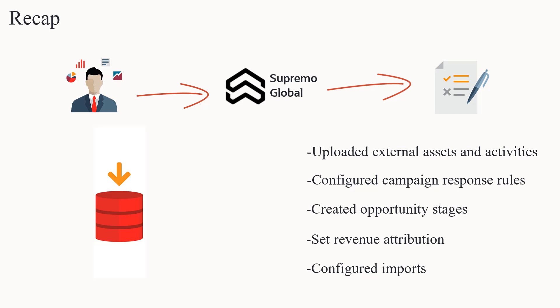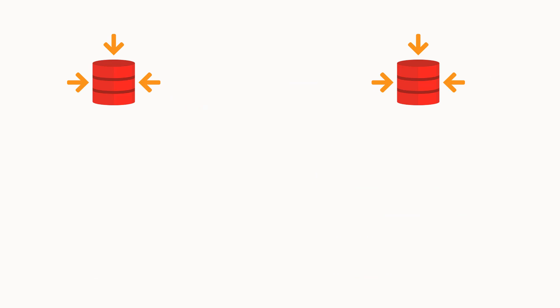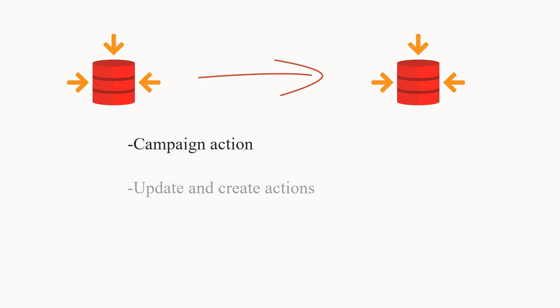Actions are data transactions from Oracle Eloqua to CRM. There are three actions you must synchronize for closed loop reporting: campaign action, update and create actions, and campaign response action.